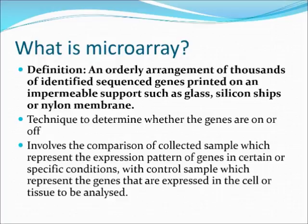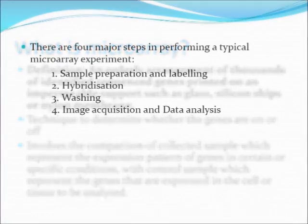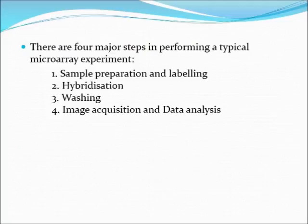Microarray is an orderly arrangement of thousands of identified sequence genes printed on impermeable supports such as glass, silicon chips, or nylon membrane. It is used to determine whether genes are on or off. There are four major steps to perform this technique: sample preparation and labelling, hybridization, washing, and lastly image acquisition and data analysis.